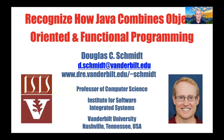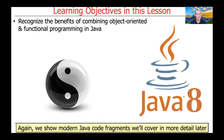We're now going to talk about how you can combine Java's object-oriented and functional programming paradigms effectively. Earlier, we talked about some of Java's key object-oriented concepts and features, as well as some of Java's key functional concepts and features. And now we're going to talk about how we can combine them.